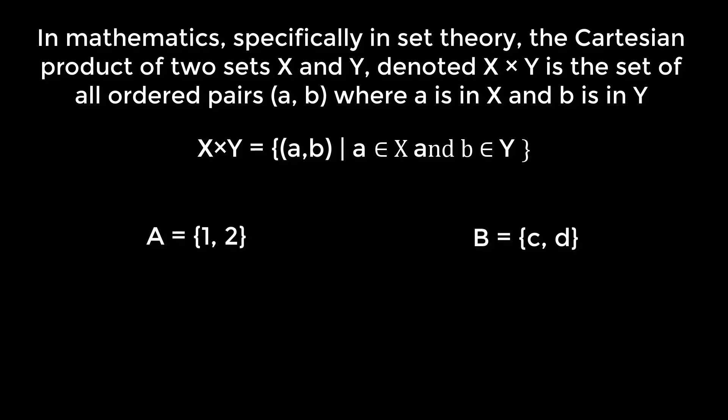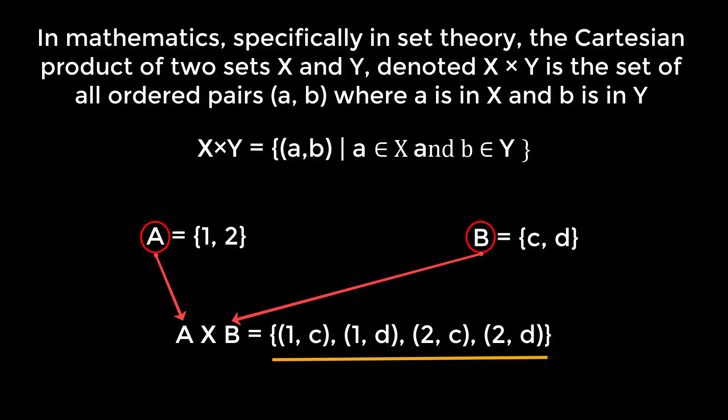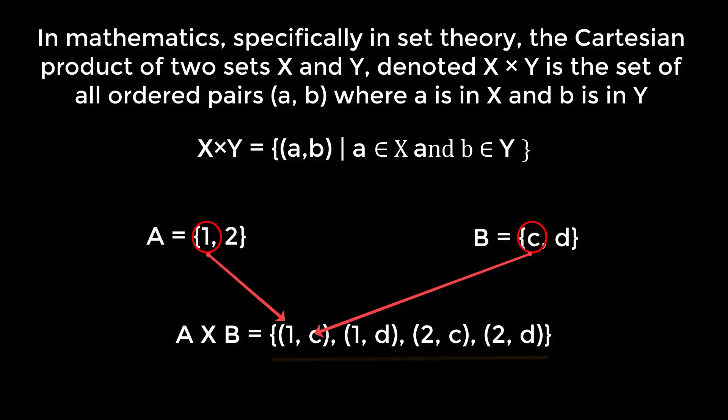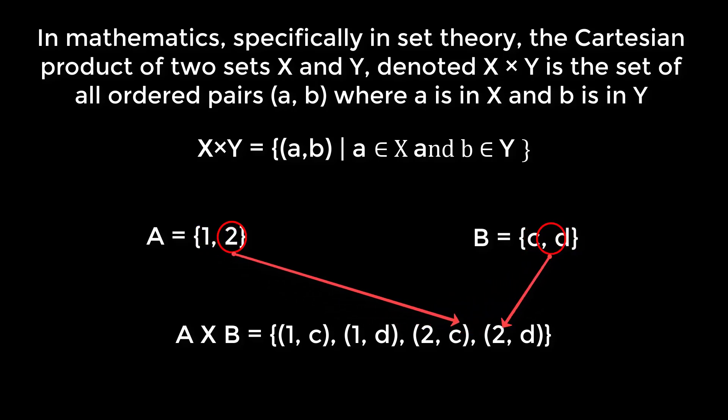Suppose there are two sets A and B, where the elements of A are 1, 2 and the elements of B are C, D. The Cartesian product of A and B is the set of ordered pairs where the first elements are members of set A and the second elements are members of set B. That means A cross B is the set of (1,C), (1,D), (2,C), and (2,D).